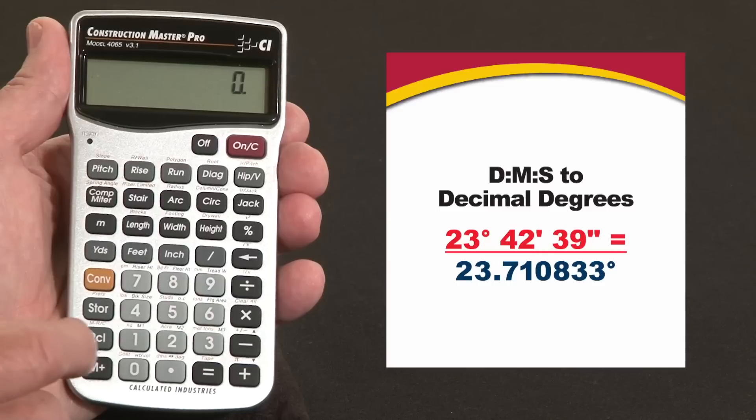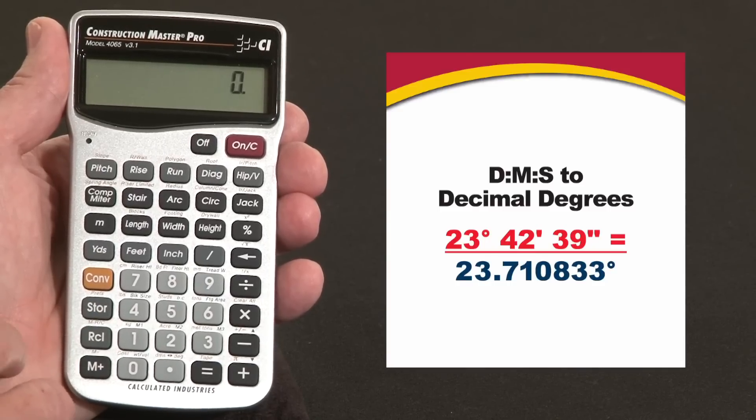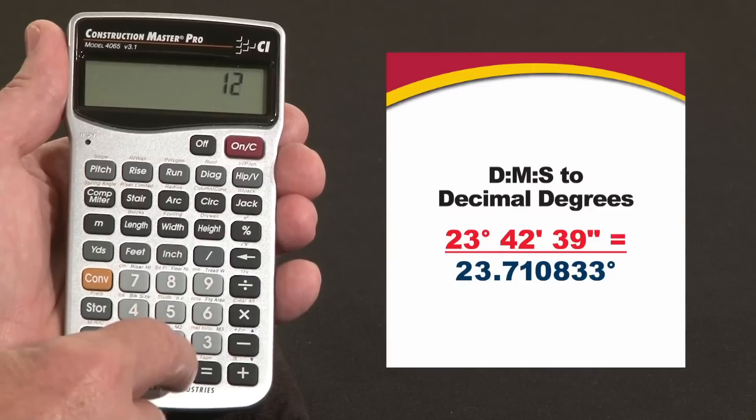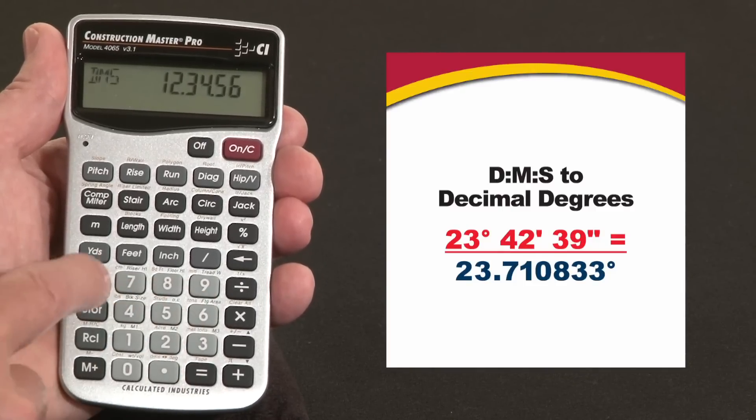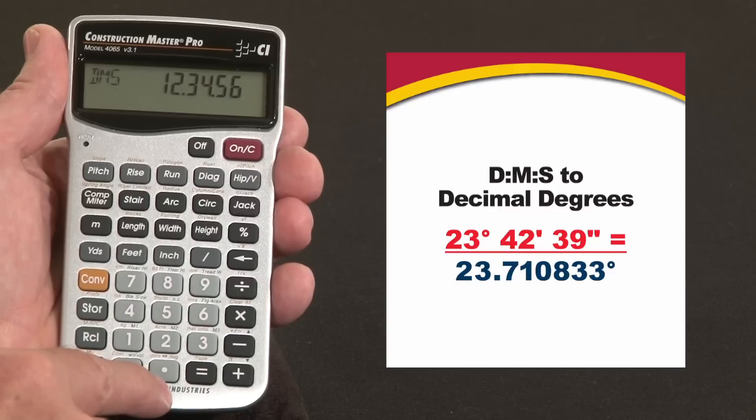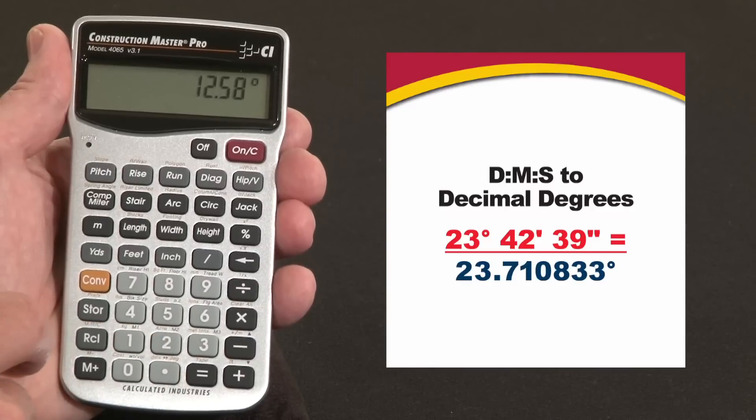It's a simple conversion of surveyors DMS coordinates to decimal degrees. Say you've got a set of plans that say 12 degrees, 34 minutes, and 56 seconds, and you want to convert that. Hit convert over the decimal point key, it says DMS to decimal degrees, 12.58 degrees.